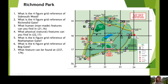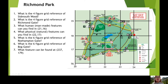Please answer question two. Now question three says: what human, man-made features can you find in grid square 2116? Let's start by going along the Eastings — 21 is here, so we know it's somewhere in this column, and 16 is here, so we're looking at this square. The question is asking for man-made features: I can see a car park, a cafe, and a gate. These are all man-made.